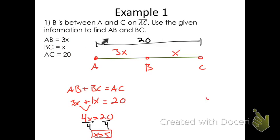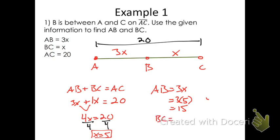If X is 5, we can find AB and BC. We know that AB equals 3X, which is really 3 times 5, or 15. AB has a length of 15 units. Then BC equals X, so substituting in X equals 5, BC has a length of 5. So we know this is 15 and this is 5, and that makes sense because the whole thing is 20.